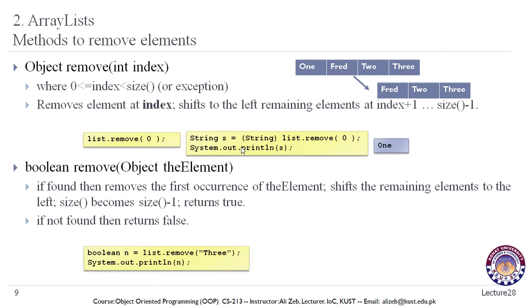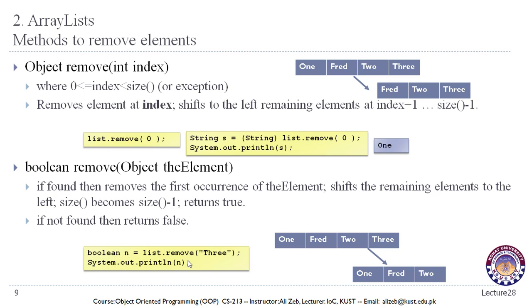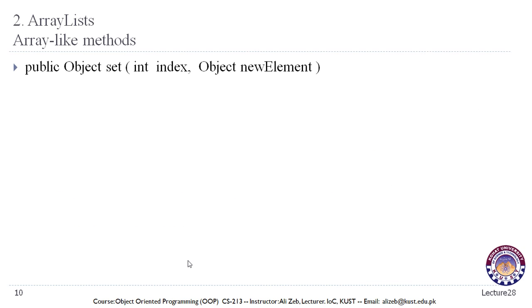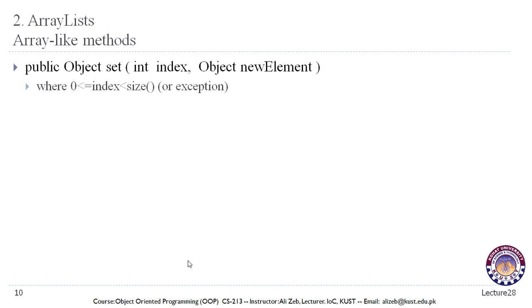For example, to remove element three from the ArrayList, it returns true if found and removed, otherwise false. For array-like methods, the set method allows replacing an element inside the ArrayList. You pass the index position and the new element value to replace the existing one. The index position should be greater than or equal to zero and less than the size of the array, otherwise you will get an exception.